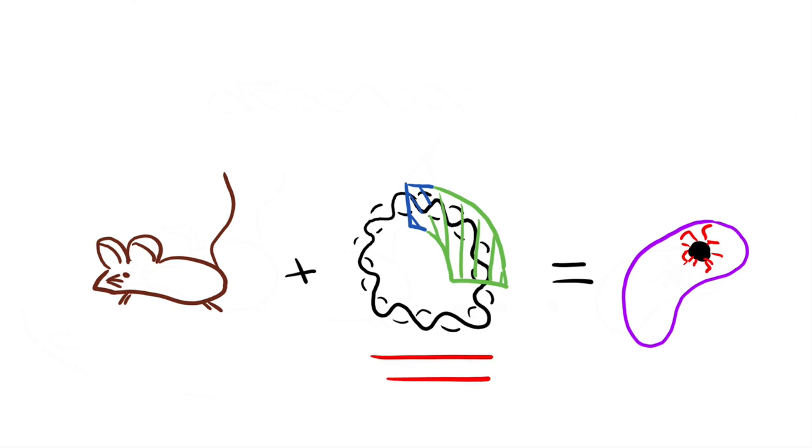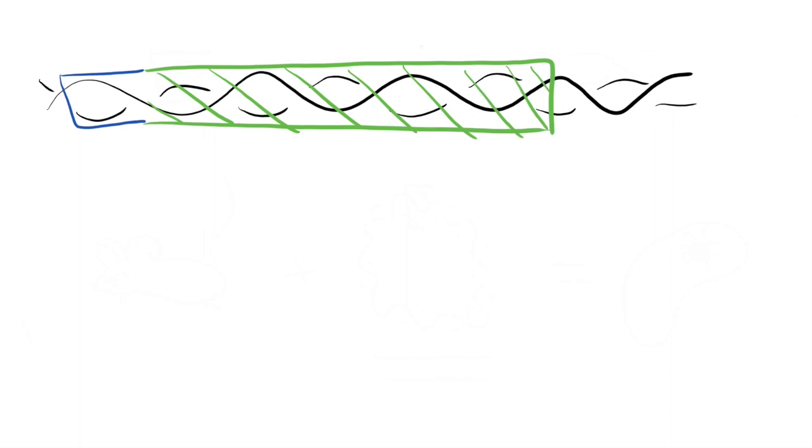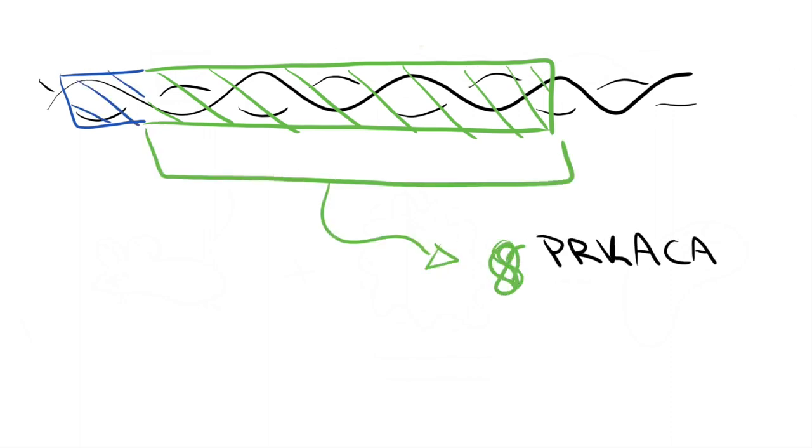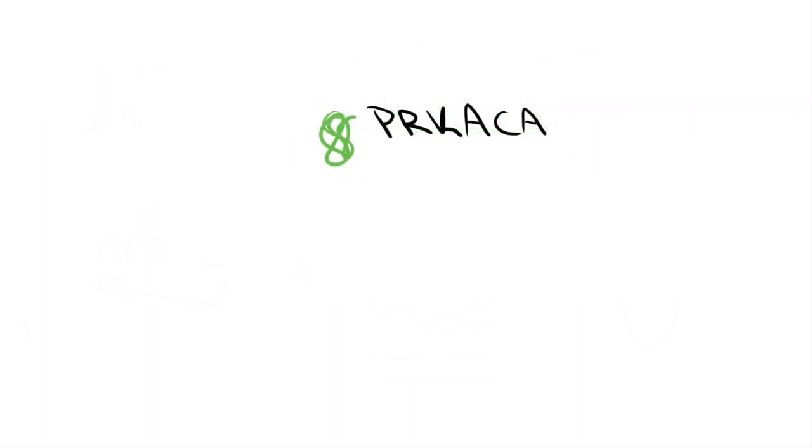This means that creating the chimera is the important part of the deletion. But what does this chimera actually do to cause the tumor? One of the two proteins that are fused to make the chimera is PRKACA. This protein usually functions kind of like a manager telling different proteins when to function and when not to.